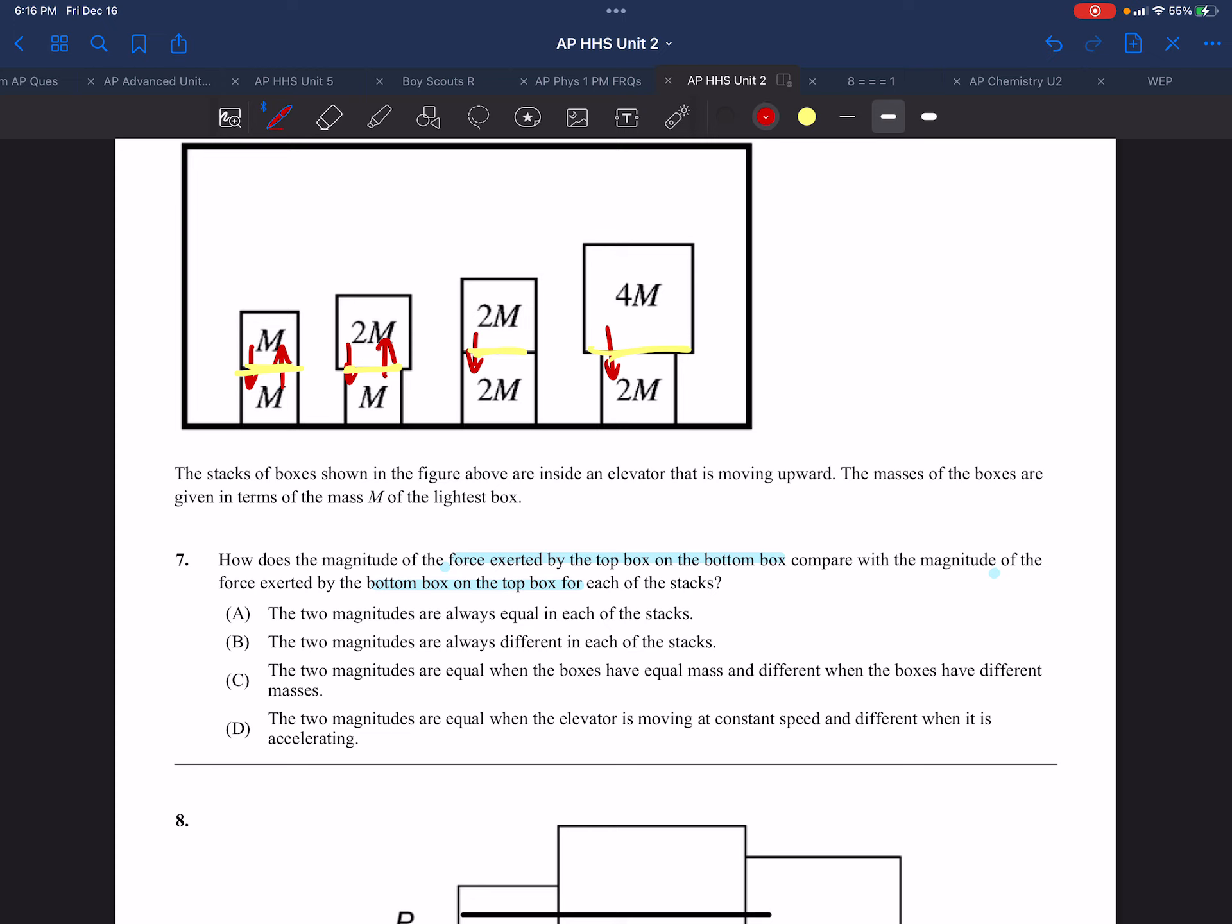A person standing on each of those two places doesn't see any relative motion, so those forces are equal and opposite. The magnitudes are always equal and opposite, as opposed to being always different or being equal or opposite based on the masses. So choice A.